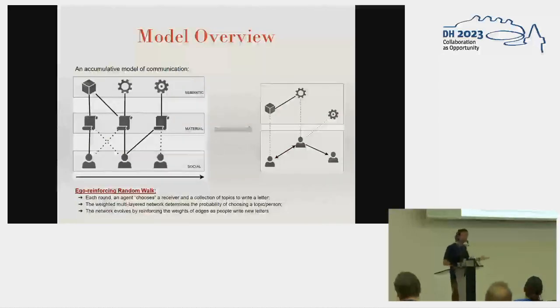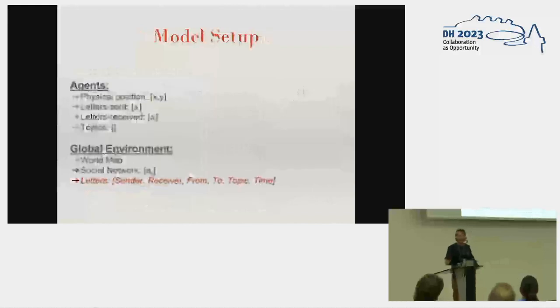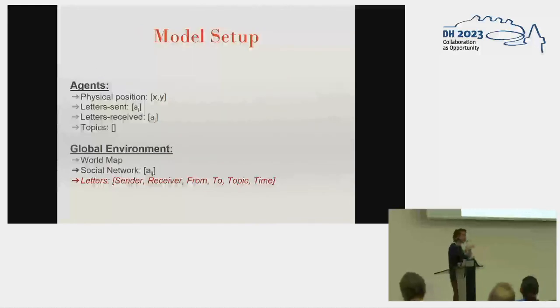The general idea is an agent-based model where each step people are writing letters to one another, and we use that to project social epistemic networks plotting relationships between people and topics. This is also a self-reinforcing ego random walk where the networks affect the likelihood of whom I'm connecting to, but each letter then reinforces the network so I'm more likely to write again to the same people about the same topics.